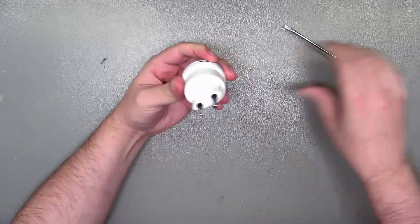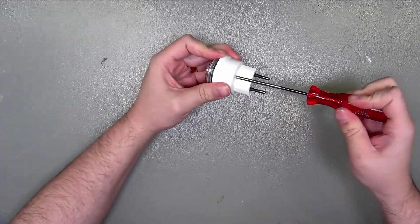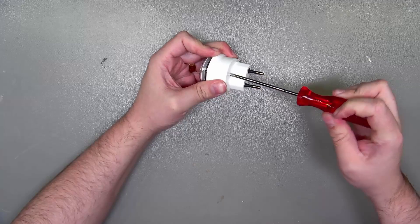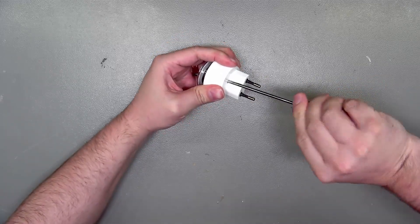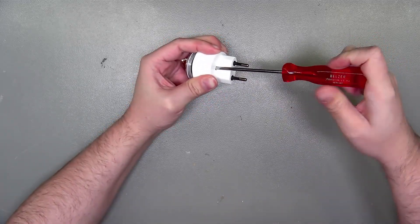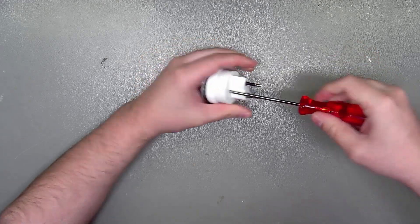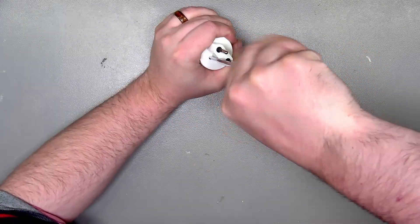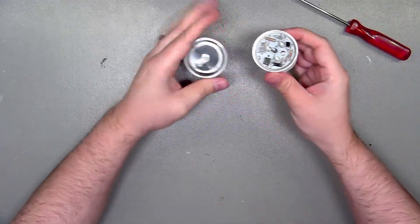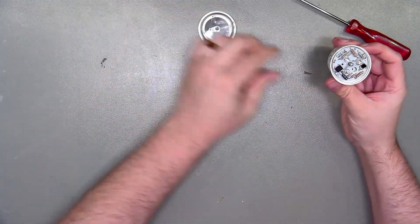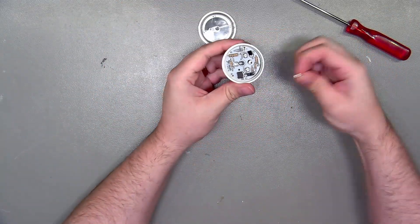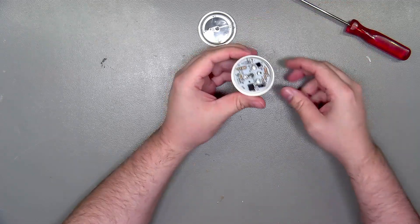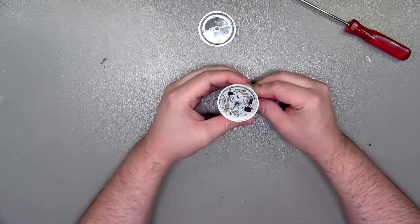So after removing the unremovable screw, which still needs to be removed a bit more, a bit more of excessive force is needed. We got that opened. Let's get rid of that stupid thing and have a look inside.